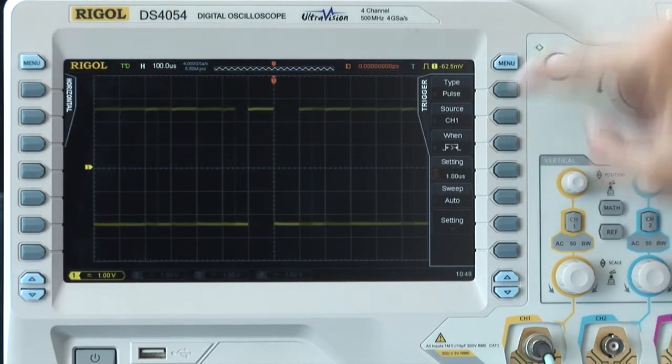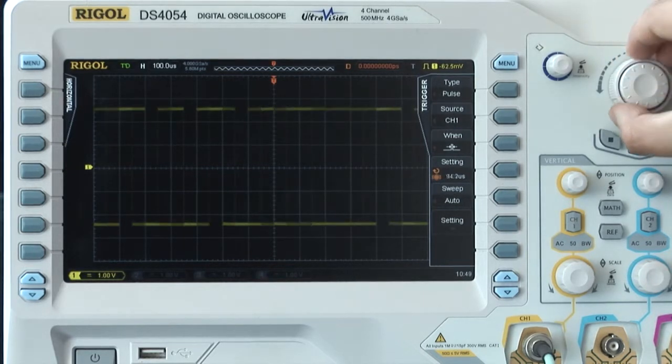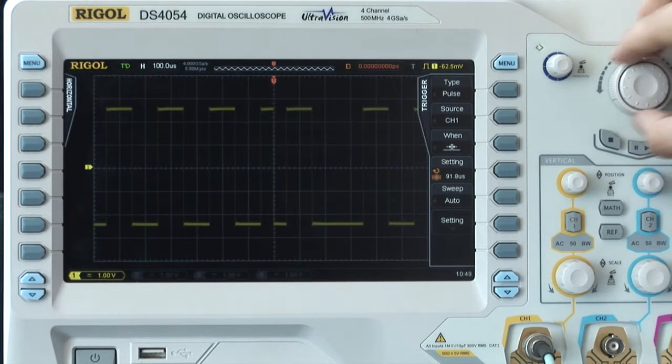Now let's choose the pulse trigger. Since the minimum pulse width of the waveform is 50 microseconds in this example, we should set the pulse condition as positive pulse larger than and set a pulse width value larger than 50 microseconds. Now we can see the waveform triggering has stabilized.